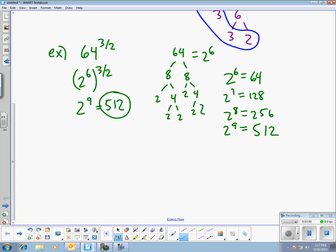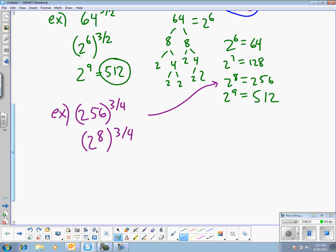Okay, another example. How about 256 to the 3 fourths? All right. I just figured out a minute ago that 256 is 2 to the 8th. So it's 2 to the 8th to the 3 fourths. So basically you take your base of your power and do its prime factorization. And I can multiply 8 times 3 fourths. And 8 times 3 fourths is 24 fourths or 6. And 2 to the 6th equals 64.